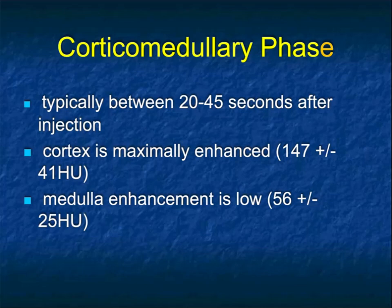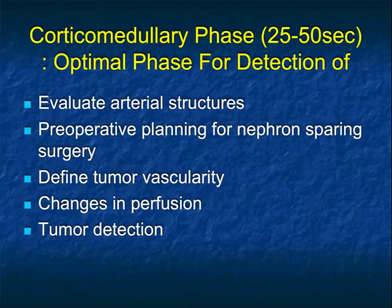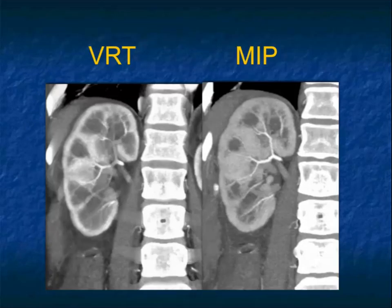In the cortical medullary phase, the cortex is maximally enhanced up to about 150 Hounsfield units and medullary enhancement is relatively low, with a difference of about 90 Hounsfield units between cortex and medulla. It's ideal for looking at arterial structures, particularly the renal arteries, excellent for preoperative planning, defines tumor vascularity, and is the best phase for distinguishing papillary from clear cell renal cell carcinoma. Changes in perfusion due to vessel narrowing or occlusion may also be best seen in this phase, and tumor detection at times will only be visible in the arterial phase.